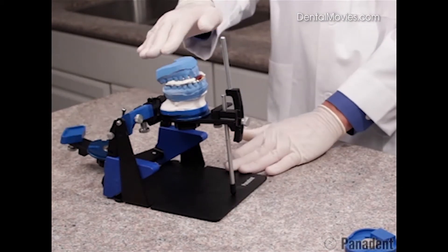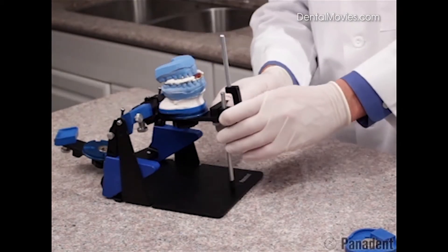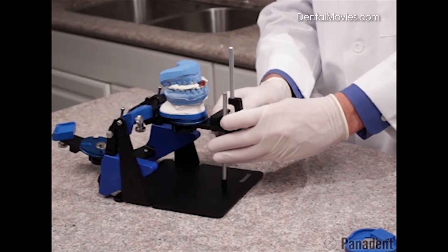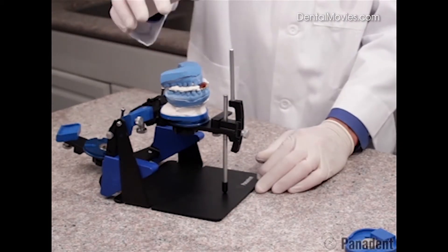And many times you have a curve of Spee here where the casts are canted downward. And so we can actually adjust the front of the articulator down to level that cast so the plaster will actually stay in place during the mandibular mounting procedures.